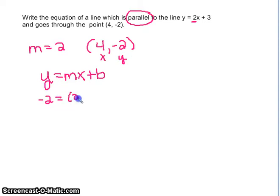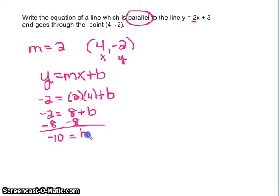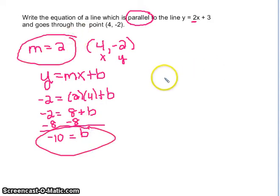Negative 2 equals 2 times 4 plus B, negative 2 equals 8 plus B, subtract 8 from both sides, and negative 10 is my B. So I have a y-intercept of negative 10, a slope of 2, so my answer is going to be y equals 2x minus 10.